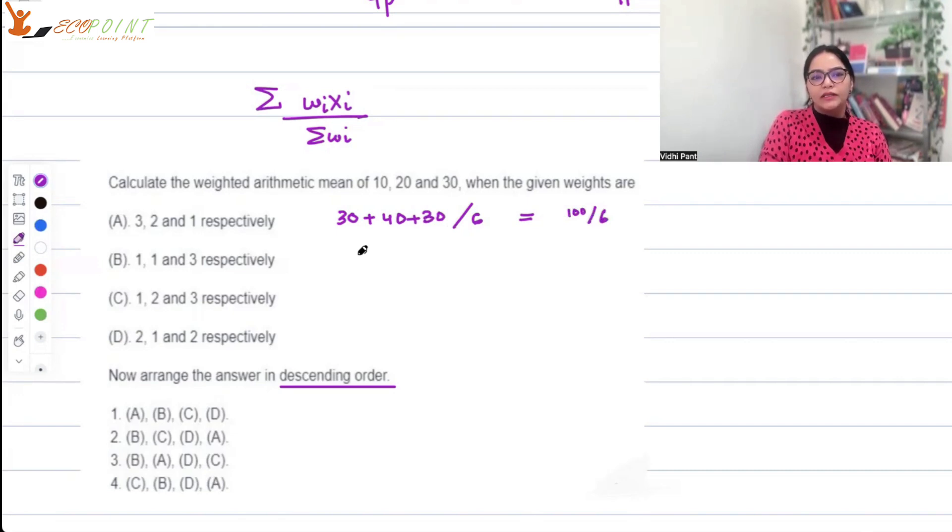This one is 10 + 20 + 90 upon 5, so this is 120/5. This one is 10 + 40 + 90 upon 6, so this is 140/6.